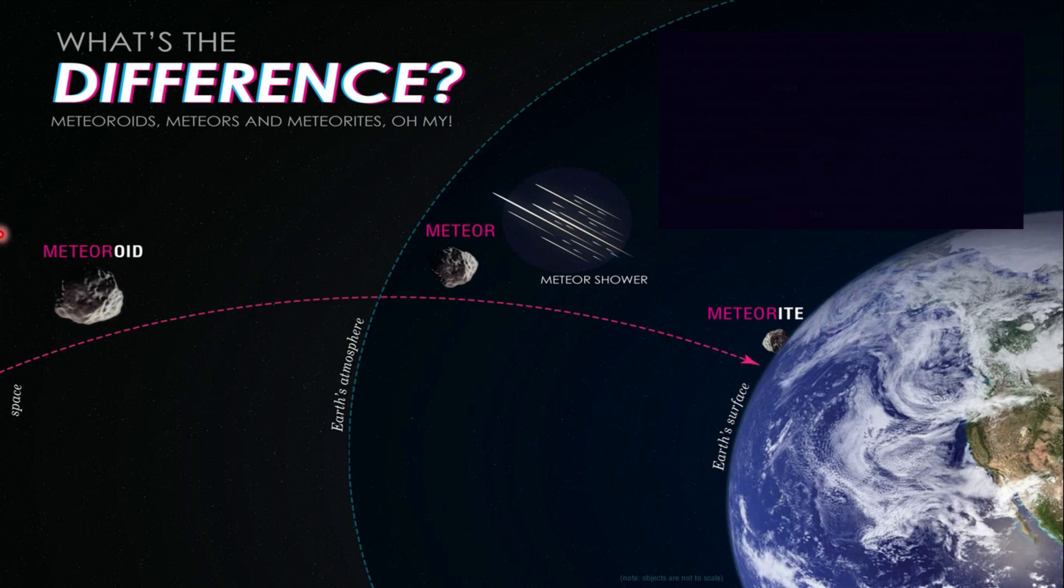A meteoroid is a small fragment of rock and metal that floats in outer space and travels around the Sun. When meteoroids enter the Earth's atmosphere, it becomes a meteor. There will be friction between air and the meteor that produces heat, resulting in a streak of light.